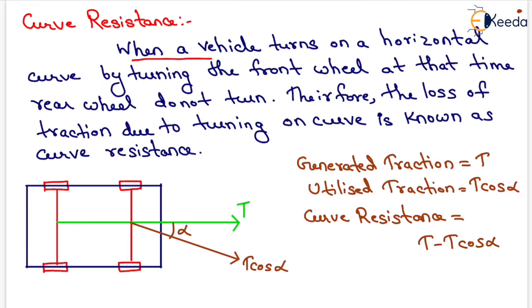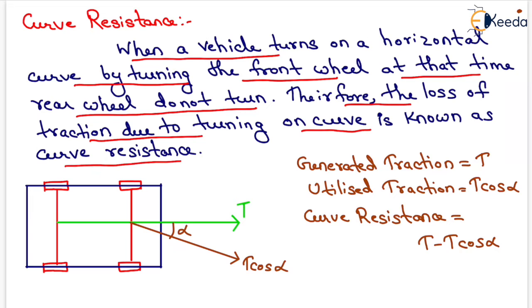Now, when a vehicle turns on a horizontal curve by turning the front wheel at that time, rear wheel do not turn. Therefore, the loss of traction due to turning on curve is known as curve resistance.